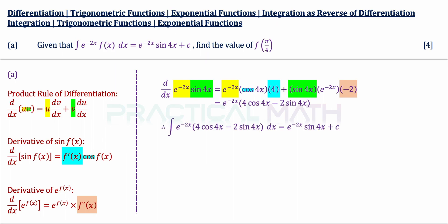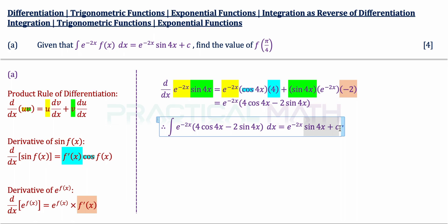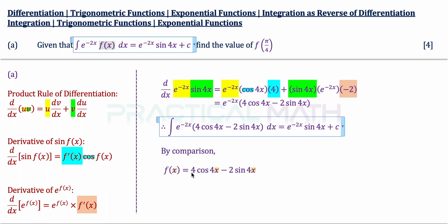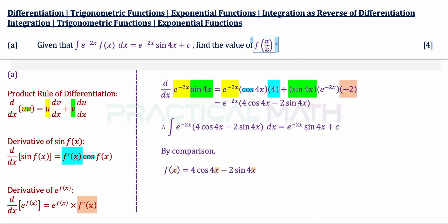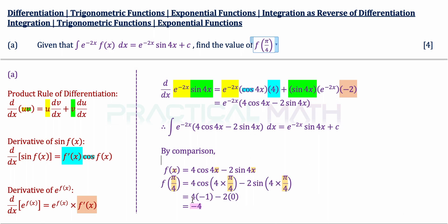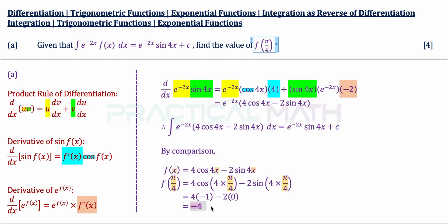Integrating the result of this differentiation will give us e to the power of negative 2x sin 4x plus c. Once we have established this, we do a comparison with the original equation in the question. Comparing the e to the power of negative 2x on the left, f(x) is 4 cos 4x minus 2 sin 4x. By substituting x = π/4 to find f(π/4) and evaluating using special angles, we get a result of negative 4. That is the answer for part A.